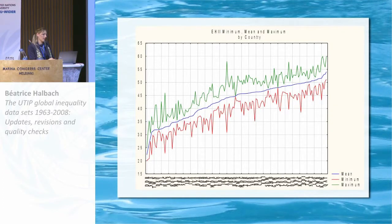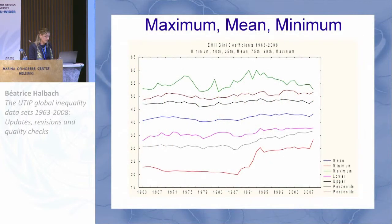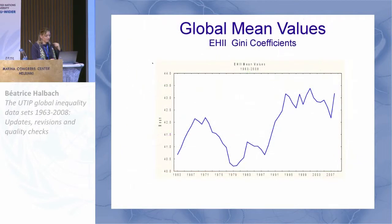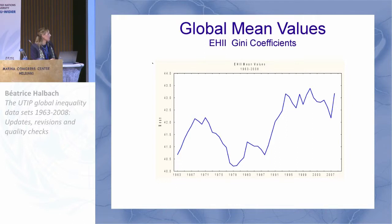Here I just have some summary statistics on the EHI, and some more. This chart shows the global mean values, and as you can see it picks up the widespread rise in inequality in the 1980s and in the 1990s, which is pretty common across other measures too.